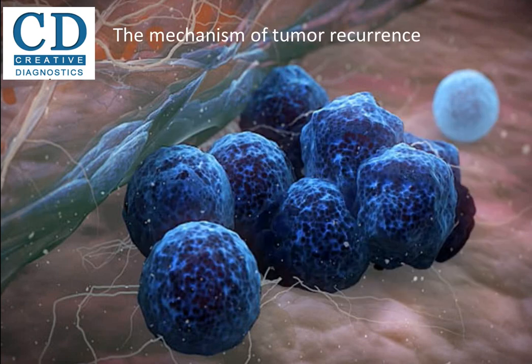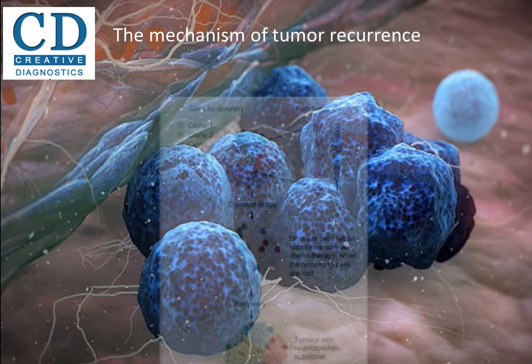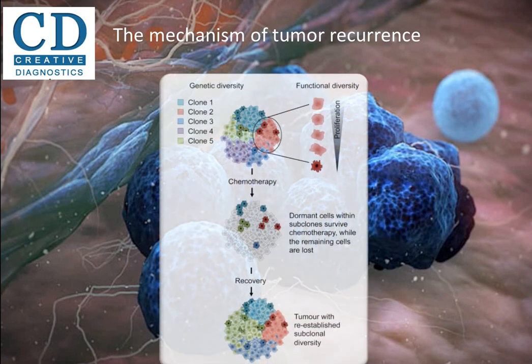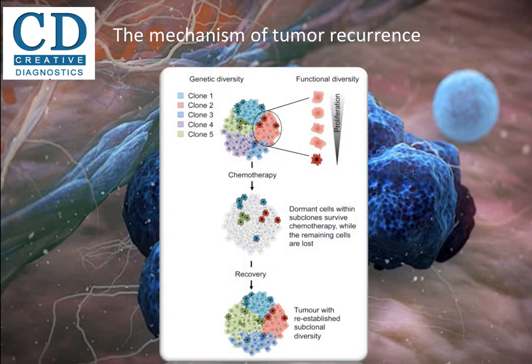Why does the tumor recur after chemotherapy? Let's look at this picture. Each clone, depicted by different colors, contains a mixture of cells that vary with respect to their stemness and/or proliferative ability, including relatively dormant cells. Together, these factors represent the functional diversity present within single genetic subclones. Chemotherapy can reduce tumor burden by eliminating the highly proliferative cells within subclones, while sparing the relatively dormant cells. Since cancer stem cells are generally dormant, they can escape damage from chemotherapy and accumulate mutations.